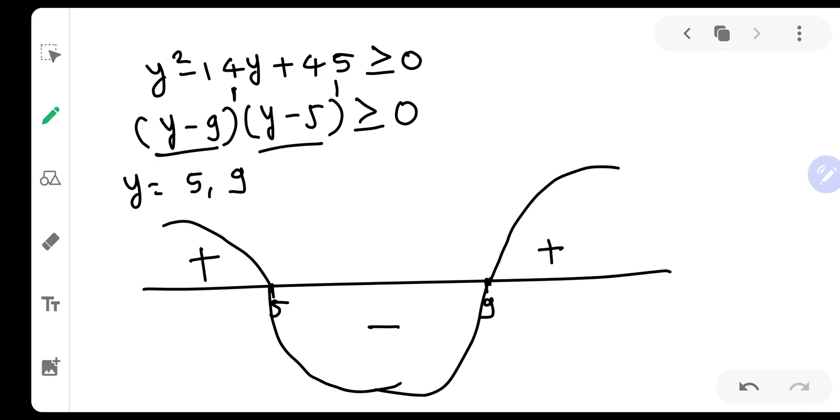Now what we actually wanted was greater than or equal to 0. So this particular part and this particular part are the values of y. So let us write down y actually belongs to minus infinity to 5 and y equal to 5 will be accepted. Why? Because equal to values are accepted. Union 9 to infinity.